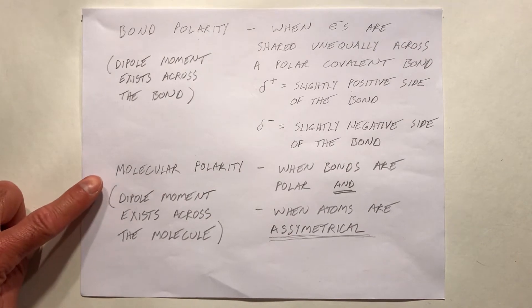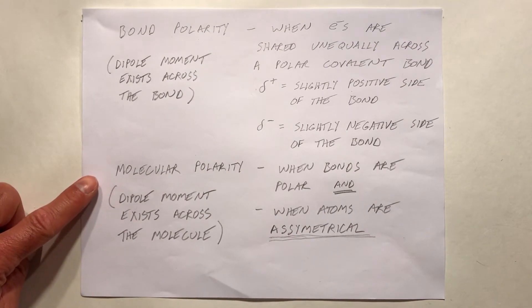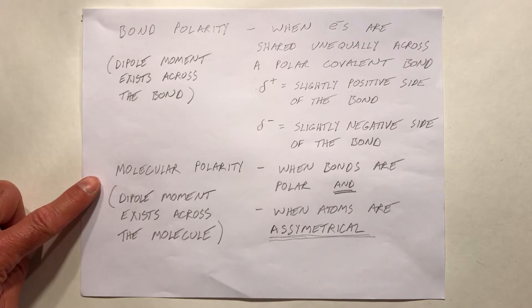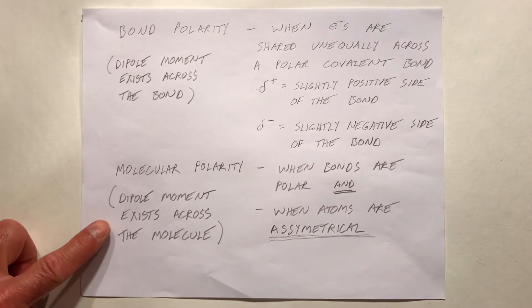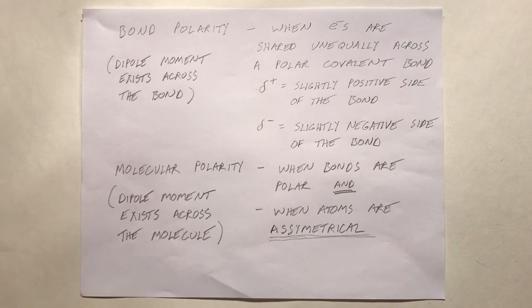Molecular polarity, on the other hand, is when we have uneven distribution of electrons across the entire molecule — then we would have a dipole moment that exists across the molecule.